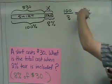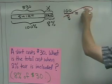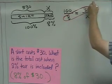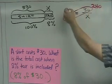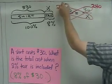I don't see a vertical or a horizontal relationship, so I'm going to use the cross products. I'm going to say 8 times 30. That's an easy one. That's 240. So 100 times X is also 240.